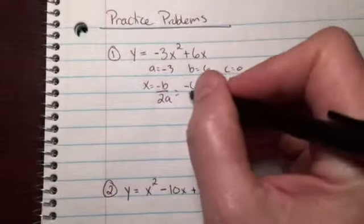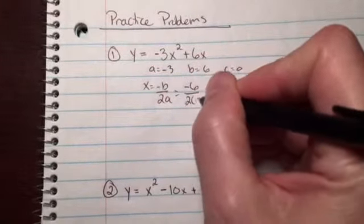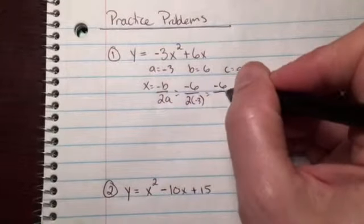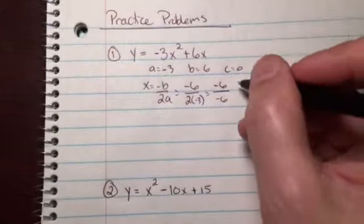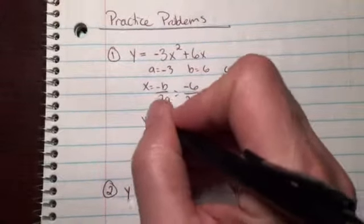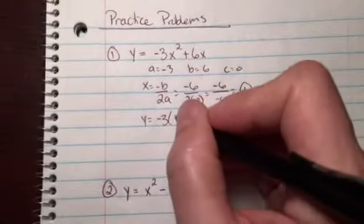Opposite of b would be -6. 2 times a is 2 times -3, that's -6. So -6 over -6, that's going to come out to be a positive 1. Plug that back in: y = -3(1)² + 6(1).